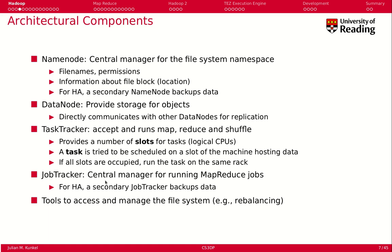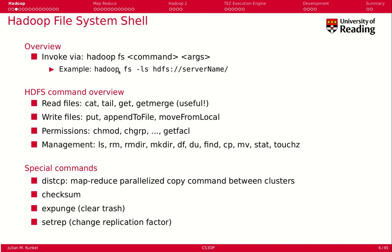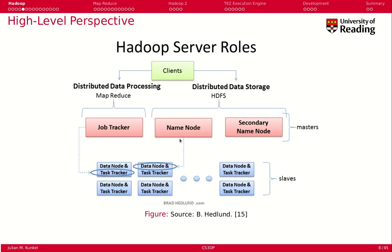The job tracker is a singular component — like the namenode, it exists only once in the cluster — and it is the central manager for running MapReduce jobs. For high availability there is a secondary job tracker. Hadoop also comes with tools for accessing and managing the file system, such as rebalancing data. The 'hadoop fs' command is one such tool.